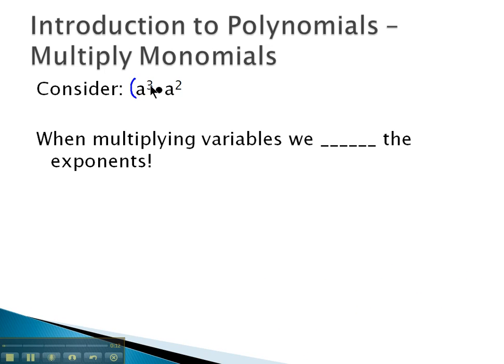What a cubed really means is we're multiplying 3 a's together, a, a, a. And then we multiply that by a squared, and what a squared really means is we're multiplying 2 a's together, a, a.